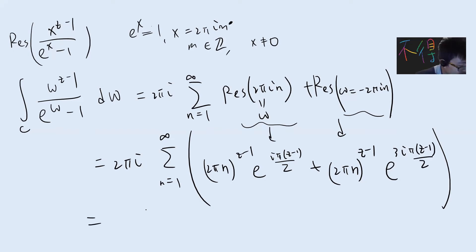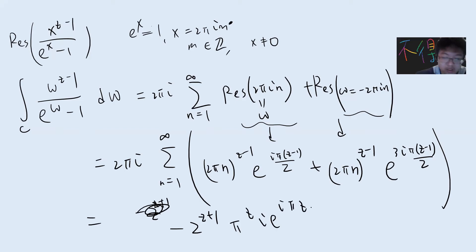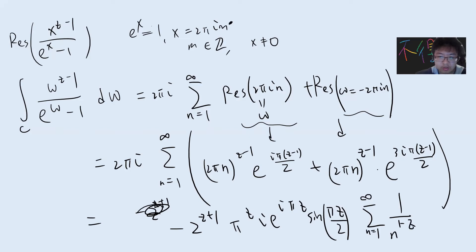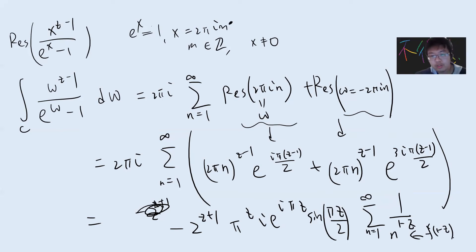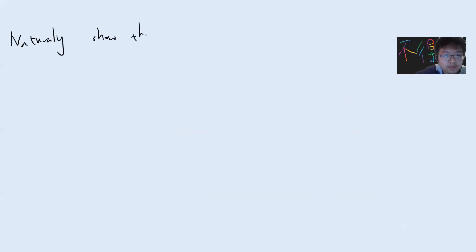After the hardcore calculation — which I'll let you verify — the residue at omega = 2πin gives (2πn)^(z-1) · e^(iπ(z-1)/2), and at omega = -2πin gives (2πn)^(z-1) · e^(3iπ(z-1)/2). Combining these and summing, you get -2^z · π^(z-1) · i · e^(iπz) · sin(πz/2) times the sum from n=1 to infinity of n^(-(1-z)), which defines ζ(1-z).